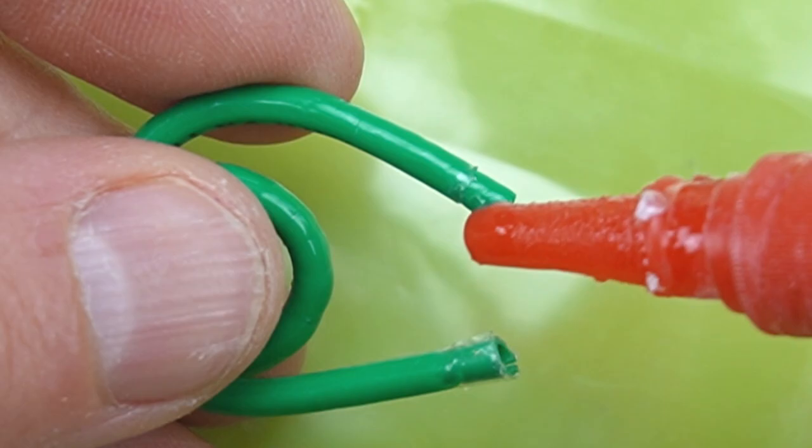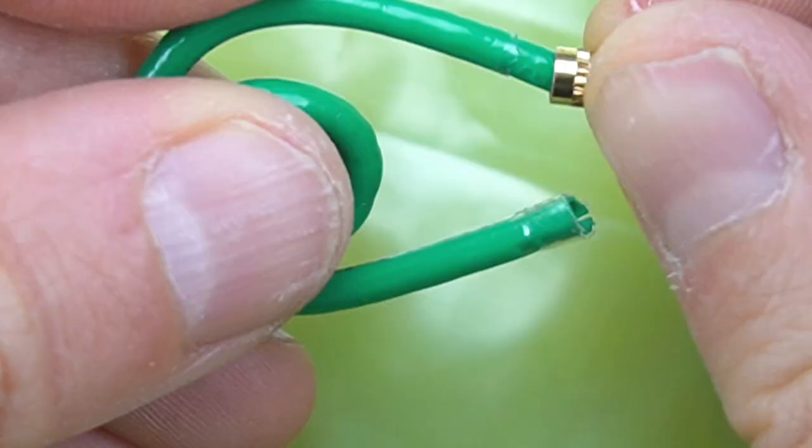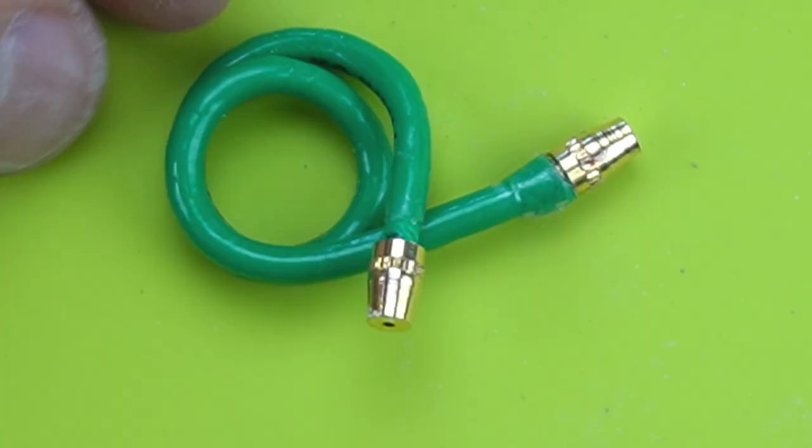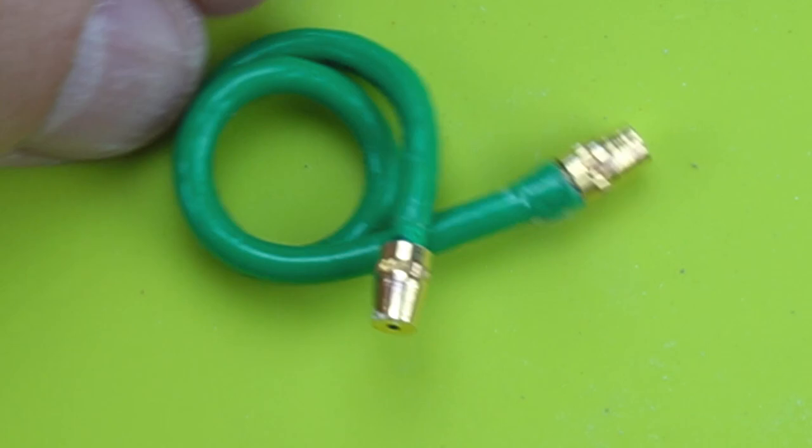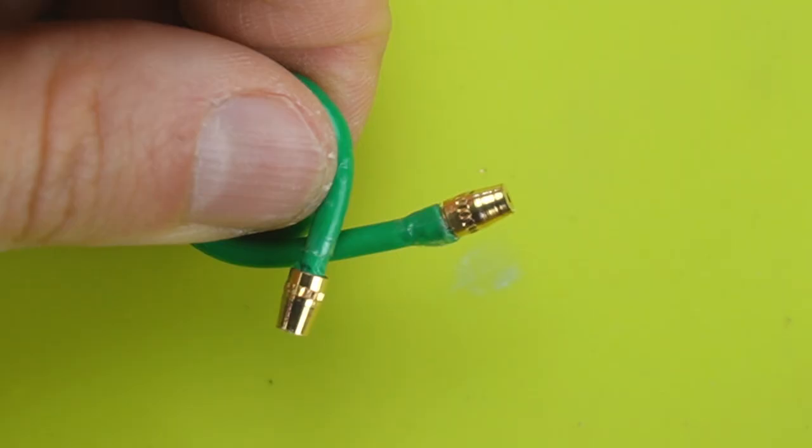I used super glue to attach the fittings. I finished the hose with a little bit of brown paint so it won't look so brand new.